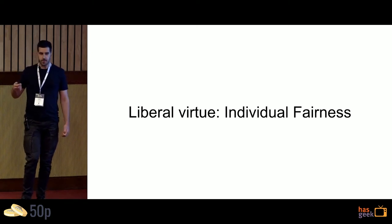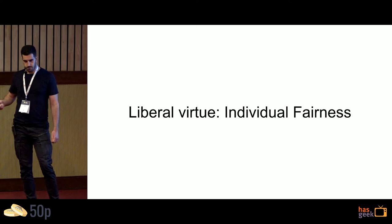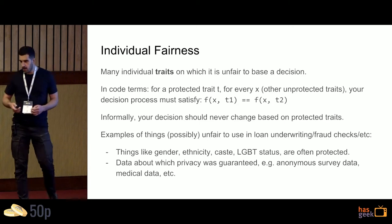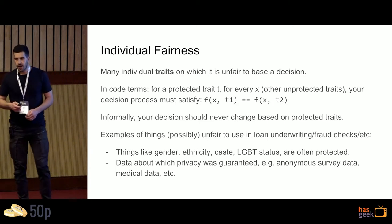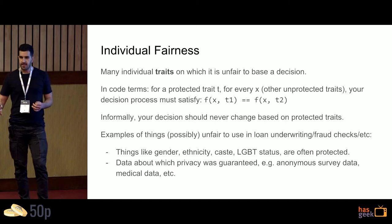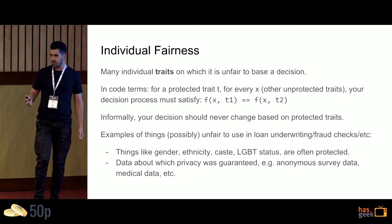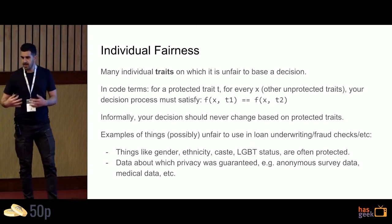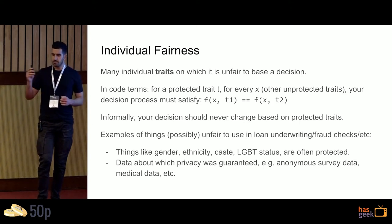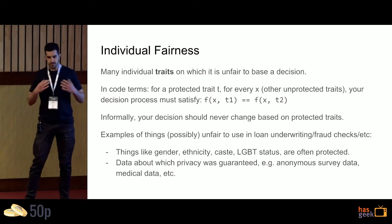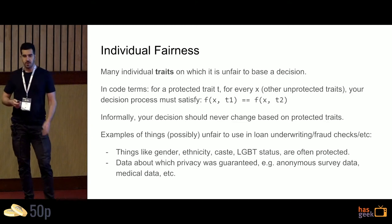The first ethical principle is individual fairness. This means there are certain traits we consider protected — gender is typically one, in India caste would probably be one, in the United States race would be one. There's a variety of traits you feel it's unfair to condition a decision on. Here's what shouldn't happen: if state of origin in India is one of these traits, I should never say, 'You're from UP, I will not lend to you, but if you were from Maharashtra I would.' Individual fairness says that should not happen, and you have to pre-specify these traits.